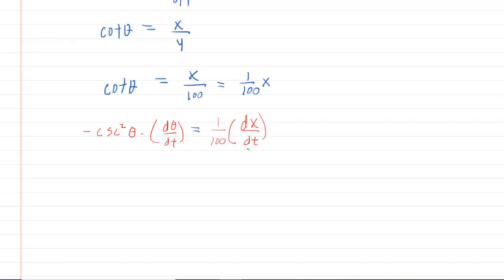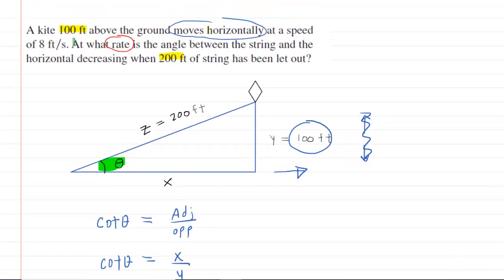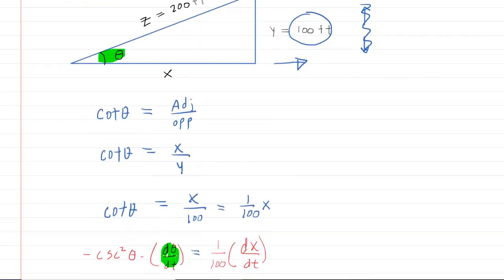It does turn out that we are trying to solve for d theta dt. If we go back to the question, it says, at what rate is the angle between the string and the horizontal decreasing? Because it's asking for the rate of the angle, we know that we're solving for d theta dt.